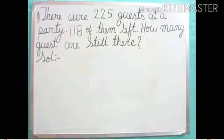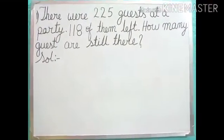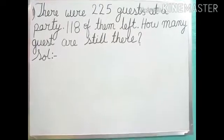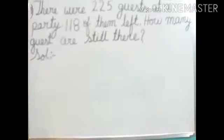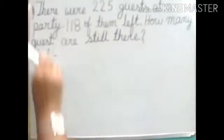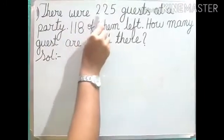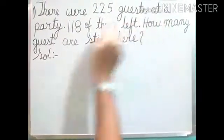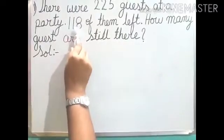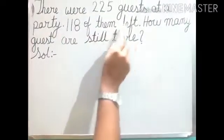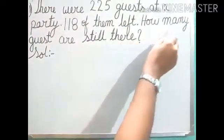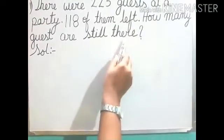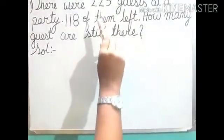Today we will revise word problems on subtraction. Let us see the first question. There were 225 guests at a party. 118 of them left. How many guests are still there? Let us again read the question.